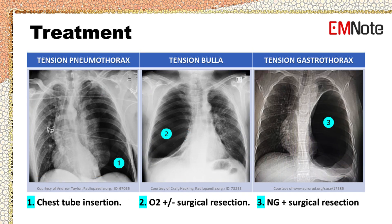Treatment of tension pneumothorax, tension bulla, and tension gastrothorax are different. Tension pneumothorax requires needle decompression or finger thoracostomy, followed by chest tube insertion. Tension bullae may be observed with O2 supplementation, but surgical resection may be necessary in severe cases. Tension gastrothorax requires nasogastric tube decompression of the stomach and surgical repair of the diaphragm.